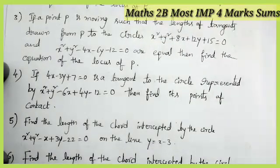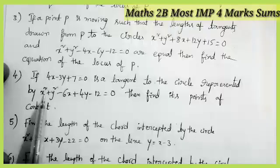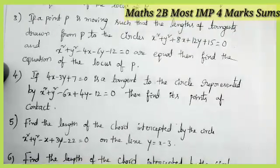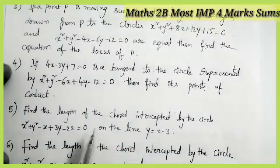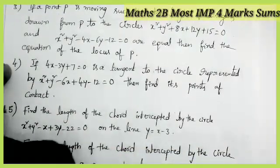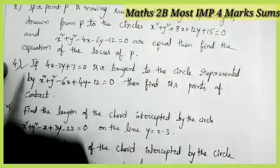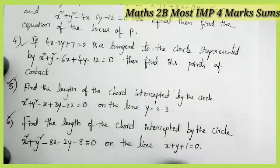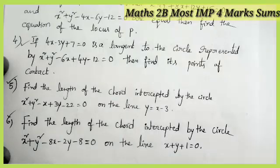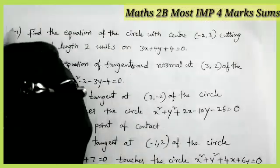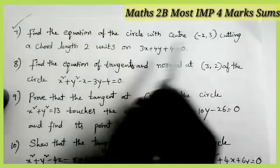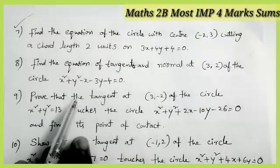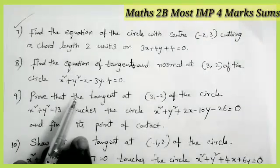Some important models from the third exercise are here. If this is a tangent to the circle, then find its point of contact. Find the length of the chord — most important model. Find the length of the chord intercepted by the circle on the line — most important model. Find the equation of the circle with center minus 2 comma 3, cutting a chord of length 2 on the line 3x plus 4y plus 4 equals 0 — most important question.